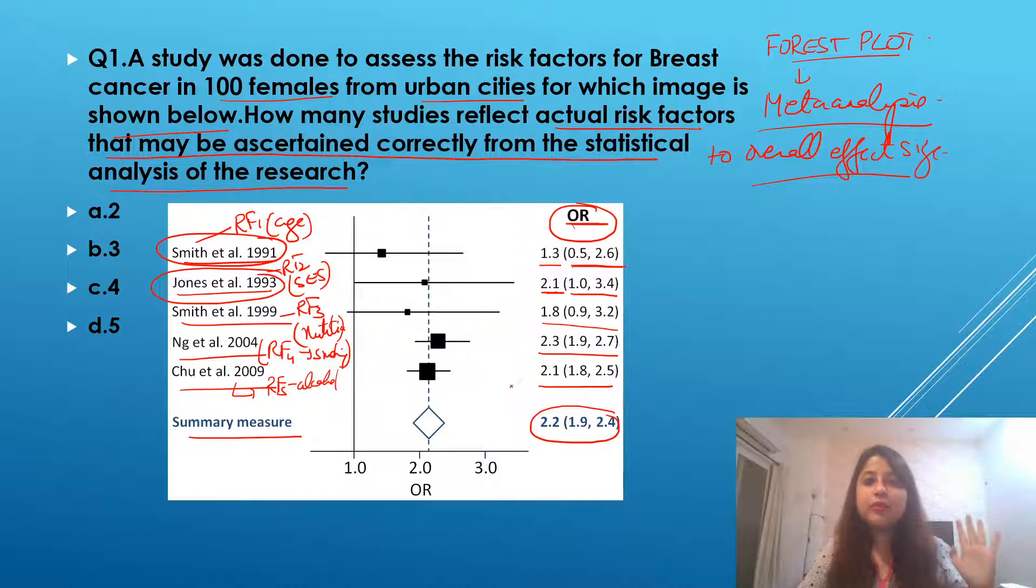Now, let me make you understand all of this meaning. First, look at these individual studies. These horizontal lines are representing individual studies. They tell us whether these risk factors are significantly associated with breast cancer or not.